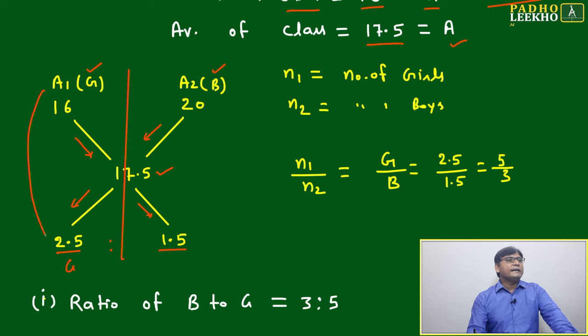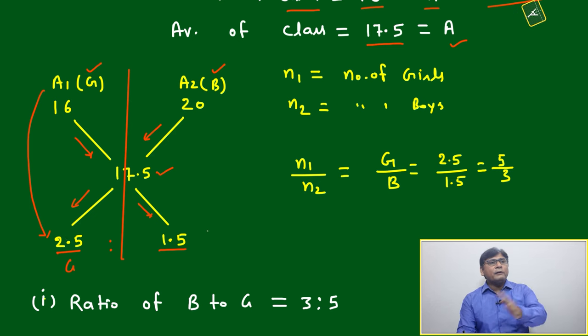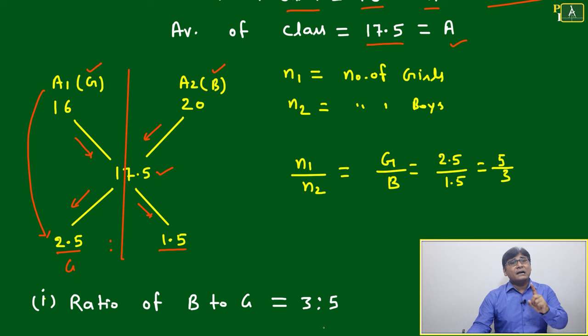Don't take in reverse way. This side, this number will give you the ratio of girls to boys. If you are taking 2.5 to 1.5, this will give girl to boy. If you are taking 1.5 to 2.5, it will give boy to girl. This order always maintain. I am again repeating: order always maintain, because based on the order many are making the mistake in allegation.